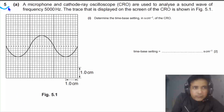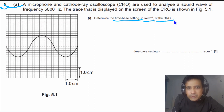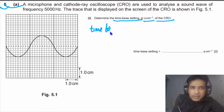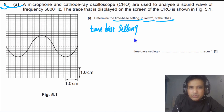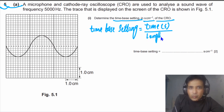For question 5, part A, we need to find out the time-base setting in seconds per centimeter of the CRO. The time-base setting is equal to total time divided by length of the wave — that is, time in seconds divided by length of the wave in centimeters.